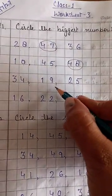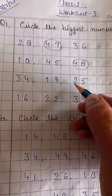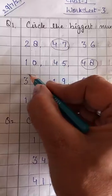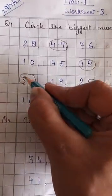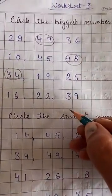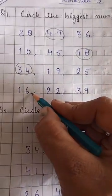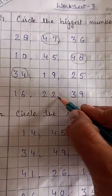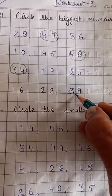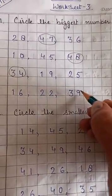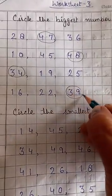Okay students, observe it. Yes, 34. Very good students. The next one is 16, 22 and 39. Which one is the greatest? 39. Very good.